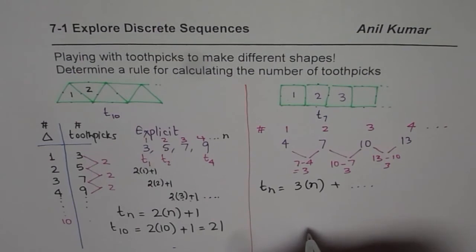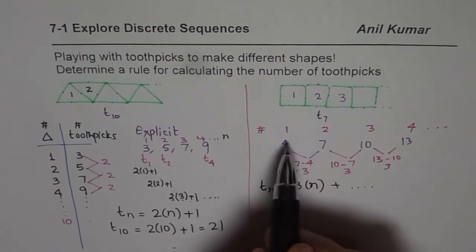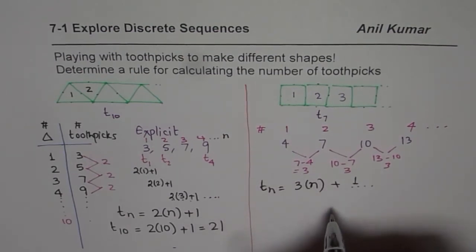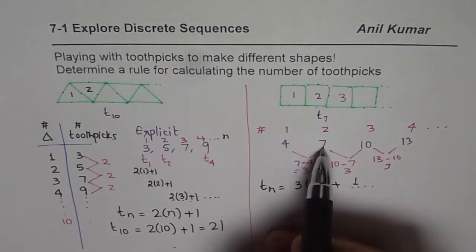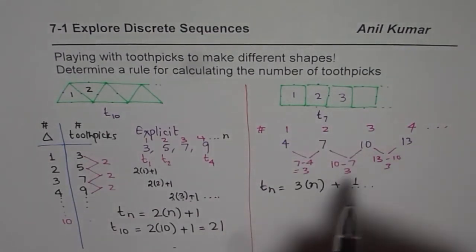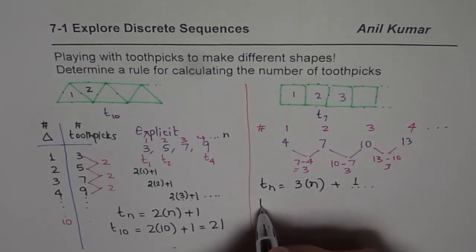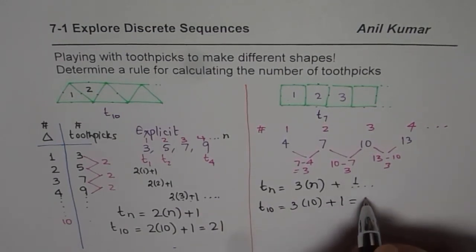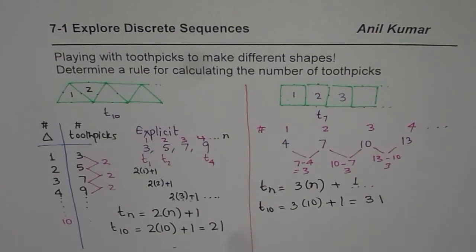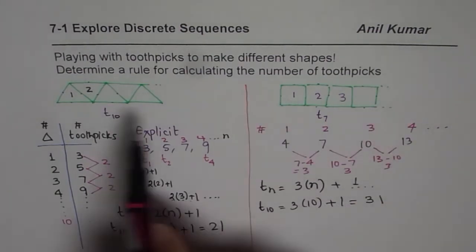So based on what we learned, we can say Tn, the general formula, is three times n plus something. We don't know what. Let us experiment. Three times one is three, and we need four — so I should add one. Three times two is six plus one is seven. Three times three is nine plus one. So we can say T10 is three times ten plus one, which means 31. So you need 31 toothpicks to make ten squares.